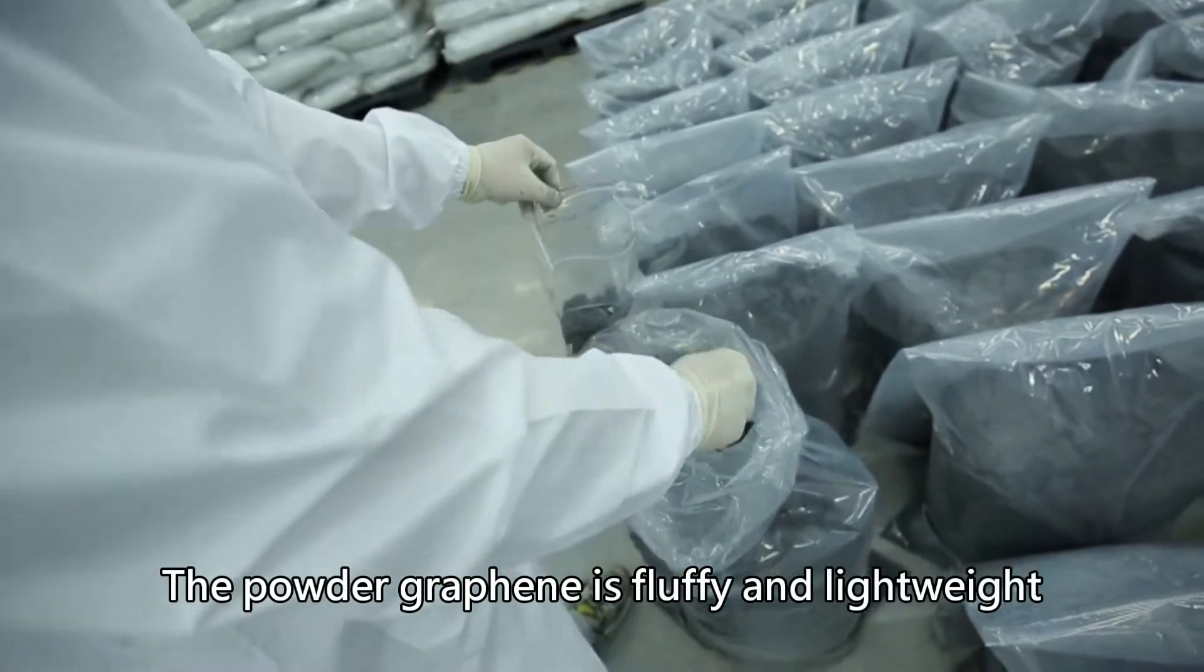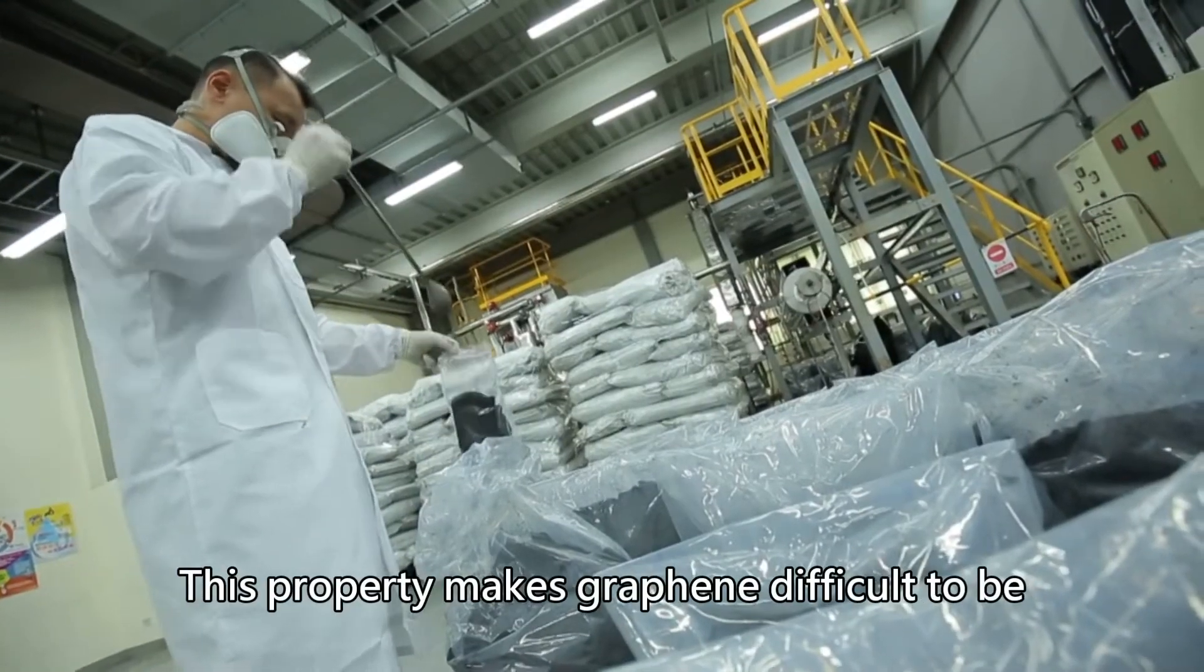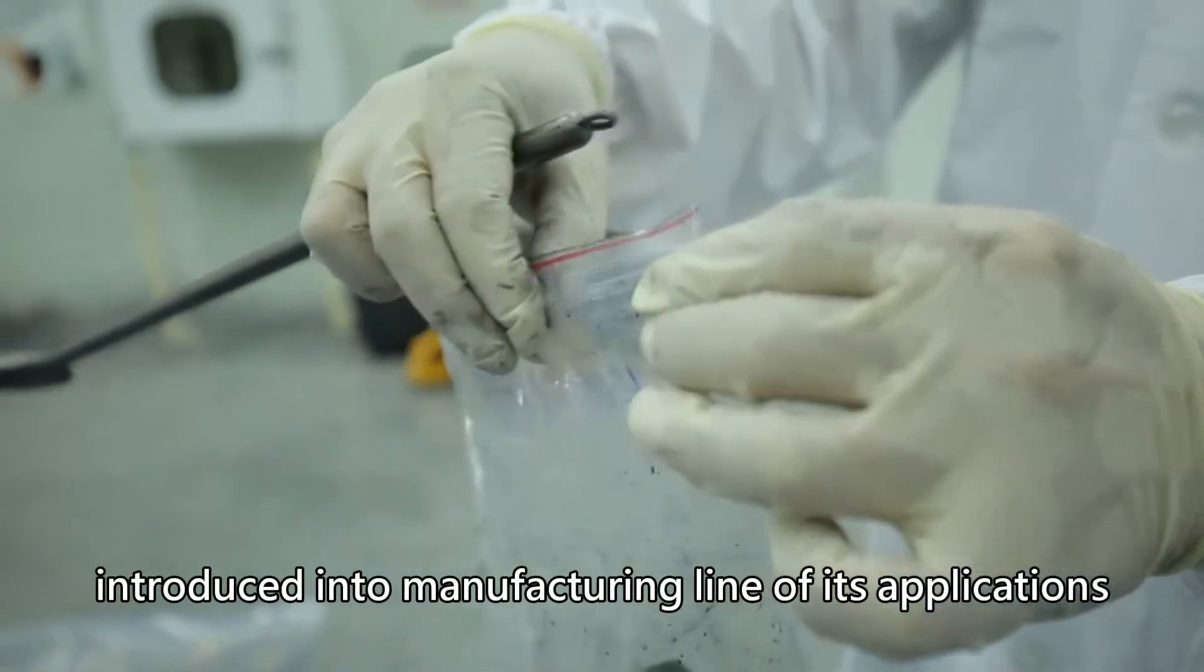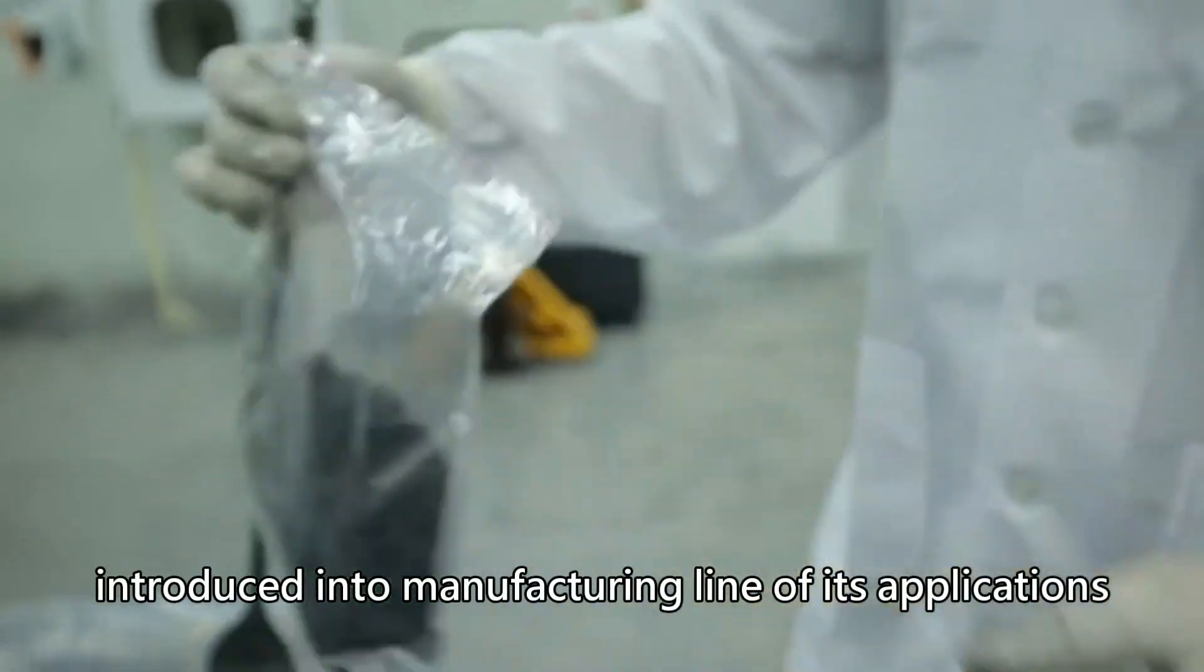The powder graphene is fluffy and lightweight. This property makes graphene difficult to be introduced into the manufacturing line of its applications.